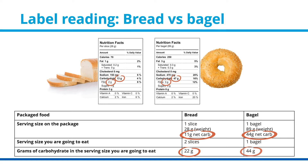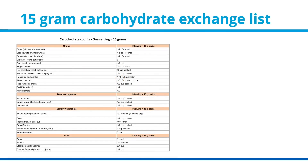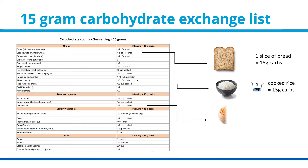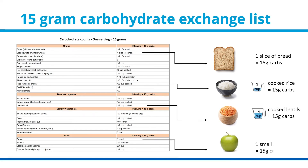Another way to determine the amount of carbohydrates in your food is based on 15-gram portions. You can use the carbohydrate exchange list to determine the portion of different foods equal to 15 grams of carbohydrate. For example, a 1-ounce slice of bread contains 15 grams, a third of a cup of cooked rice also contains 15 grams, as does half a cup of cooked lentils or one small apple. You can download a PDF of the carbohydrate exchange list in the description below.